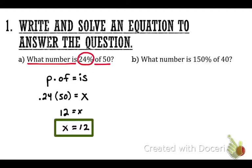Next: what number is 150% of 40? Underline 'what number is,' circle 150%, and underline 'of 40.' Let's start with the formula from today: p times of equals is.